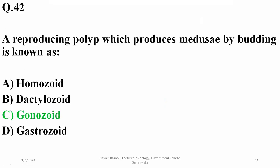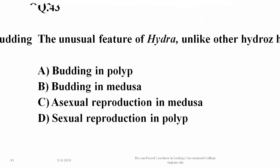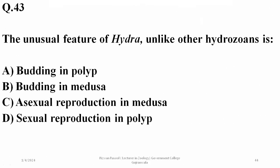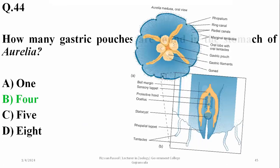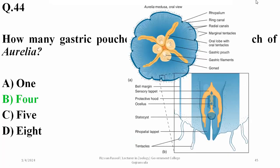Gastrozooids are feeding polyps, and defense/offense polyps are dactylozooids. The unusual feature of Hydra is sexual reproduction in the polyp state, as polyps are otherwise asexually reproducing organisms. Jellyfish (Aurelia) possesses four gastric pouches in the stomach, as seen in the diagram.